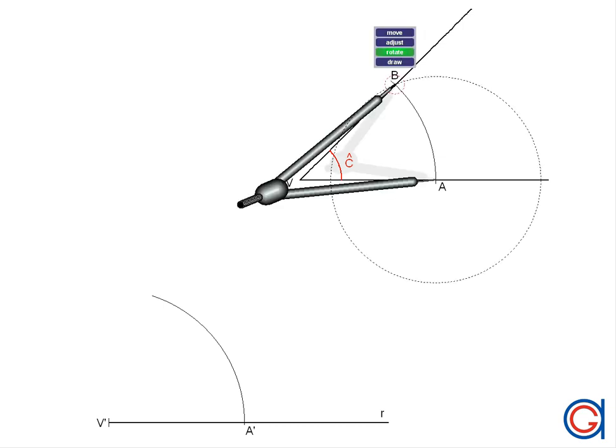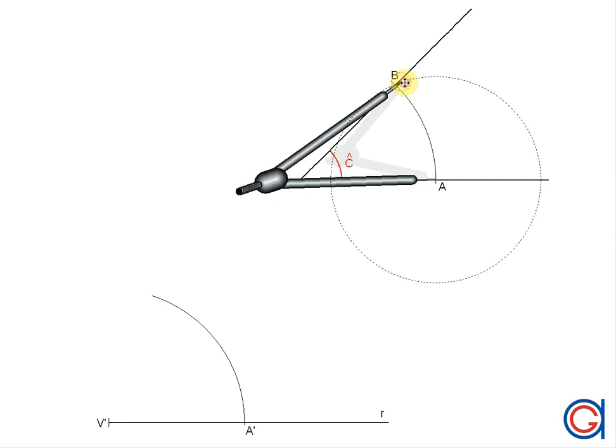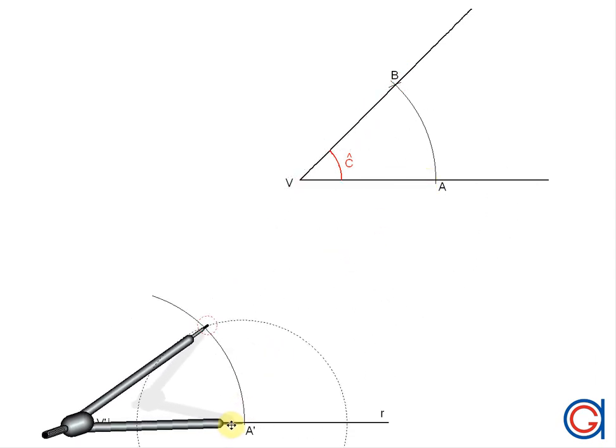So now, setting our compass to the radius AB, we are going to transport this length to the previously drawn arc, setting our compass on the point A' and scribe an arc to the right until it cuts the previously drawn arc at a new point which we will call B', as can be seen here.